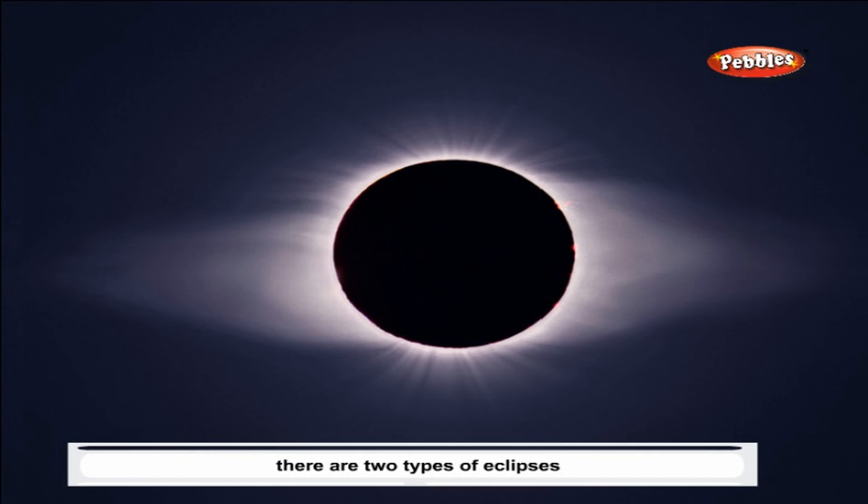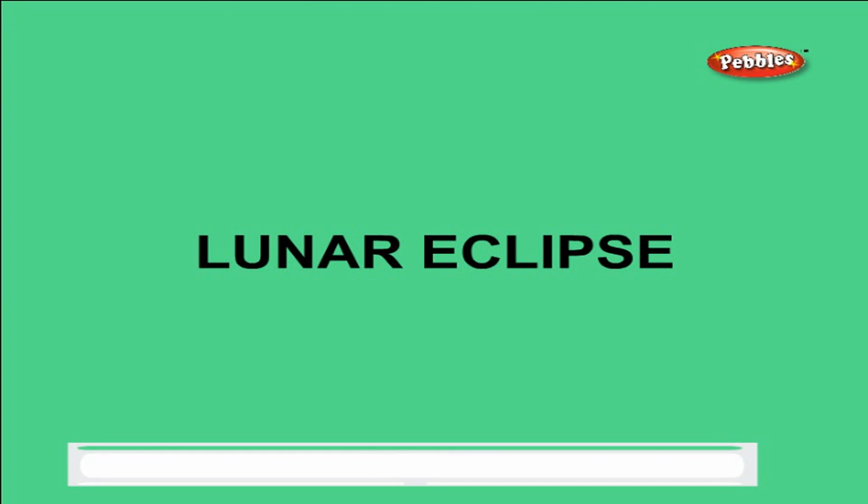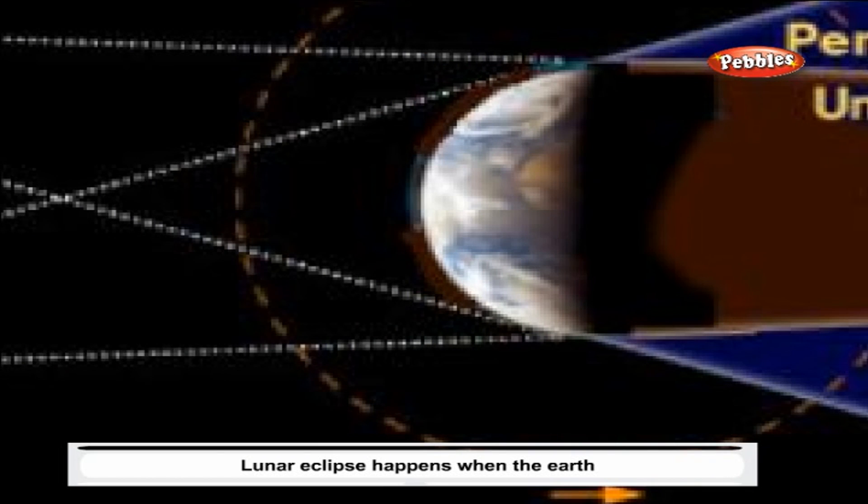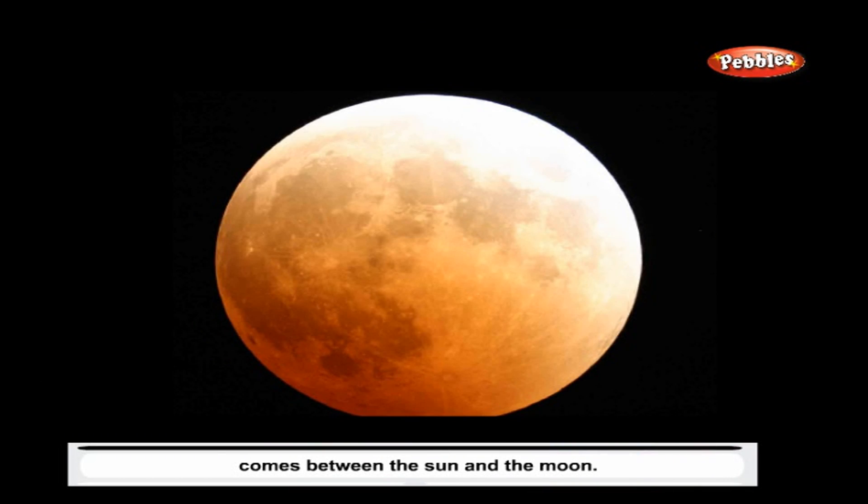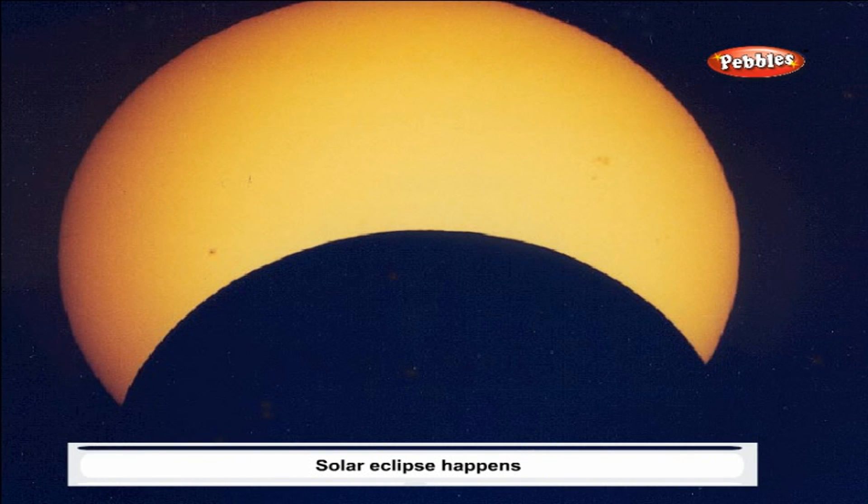Eclipses: There are two types of eclipses - the lunar eclipse and the solar eclipse. Lunar eclipse happens when the earth comes between the sun and the moon. Solar eclipse happens when the moon comes between the sun and the earth.